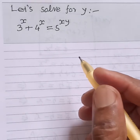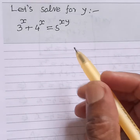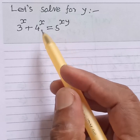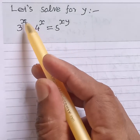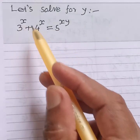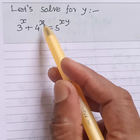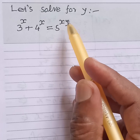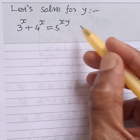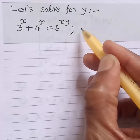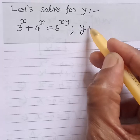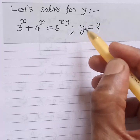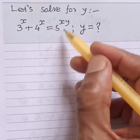Hello, welcome back to solve this problem. Given 3 to the power x plus 4 to the power x is equal to 5 to the power xy. Then, what is the value of y? We find the value of y from this equation.